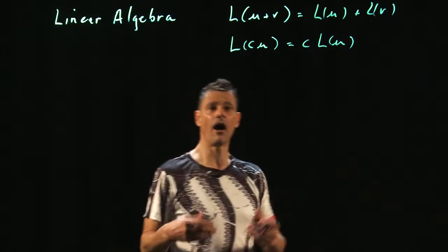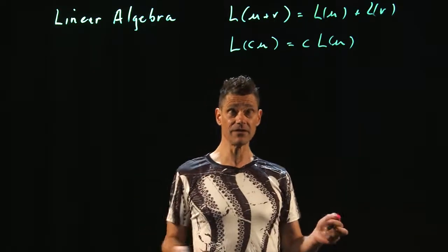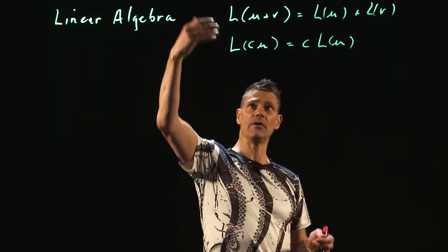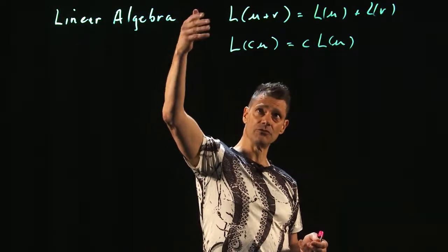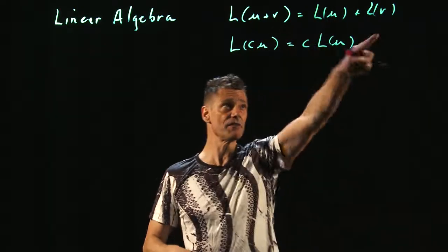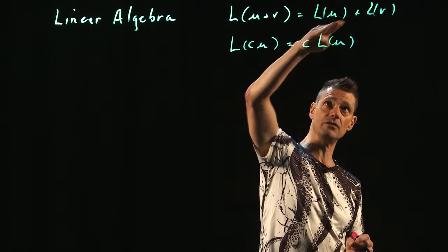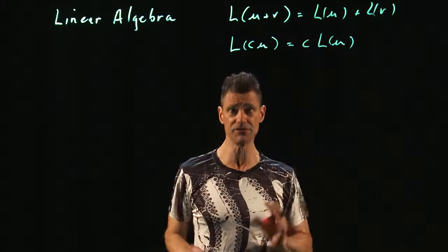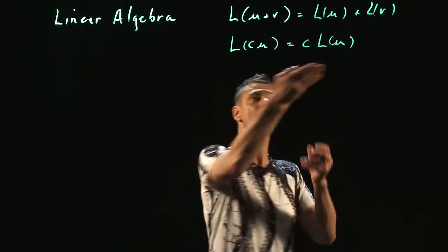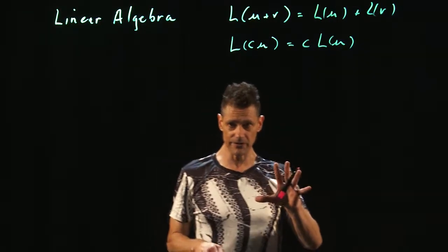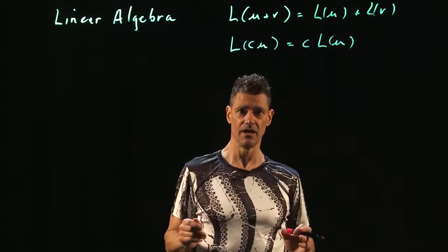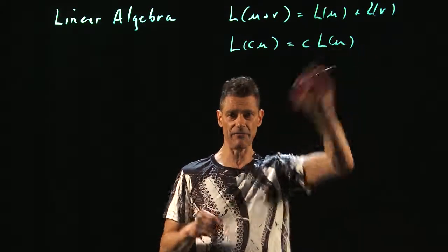Linear algebra are objects, mathematical objects, that behave like this. If you have elements in the domain, u and v, when you apply the function to u plus v, it breaks apart. It's the same thing as applying the function to u and then v separately. This is huge. It's extremely convenient. And if you have some constant c times your element u, the c pulls out. Now, believe it or not, you already know linear algebra quite well from your calculus. Calculus, integrals, and derivatives behave just like this.